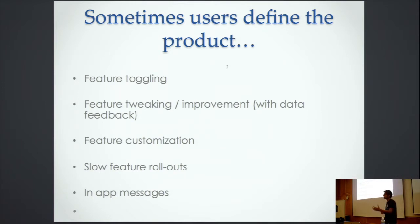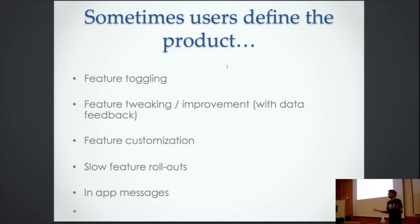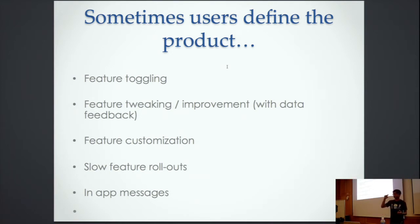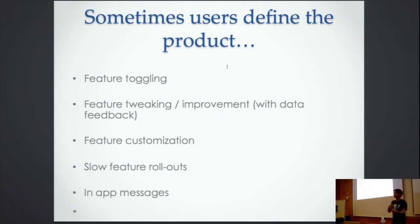Feature customization — an example is stream quality. We serve different base stream qualities based on the country you're in. If you're in a country where the internet is poor, we serve maybe 144p as the base quality. For slow feature rollout, we launched a new recommendations algorithm but weren't sure if it was better than the previous one. So we rolled it out to about 20-30% of users in the US, comparing it to the previous algorithm, then did the same in Canada and other countries.